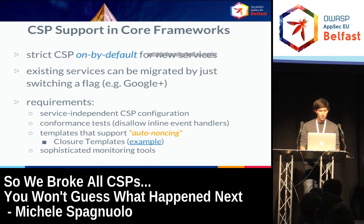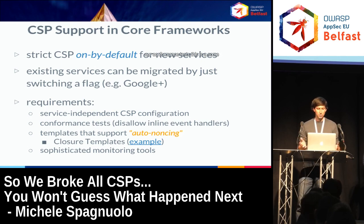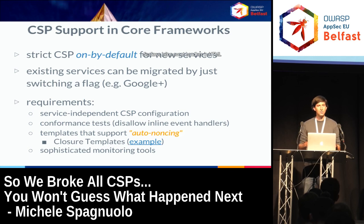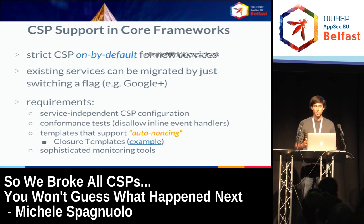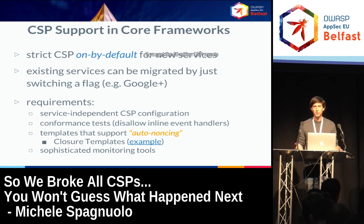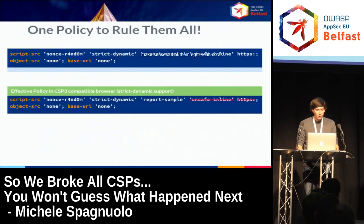Conformance tests were really helpful — these are internal tests that ensure developers don't submit bad patterns in code. One of these tests disallows inline event handlers in HTML code, so that pattern wasn't present in the codebase in the first place, making it much easier to roll out CSP. Another crucial thing is that the templating system supports auto-noncing, which I'll show in a moment. And last, you need sophisticated monitoring tools because if you get 50 million CSP reports, you have to make sense of them.